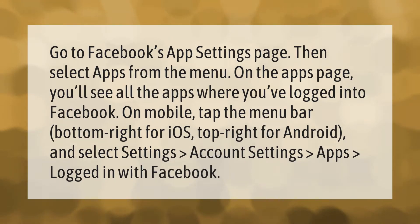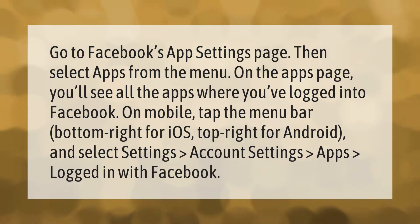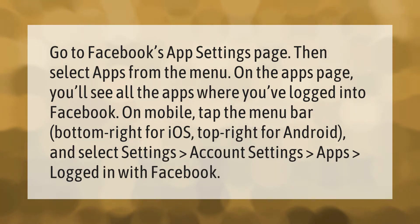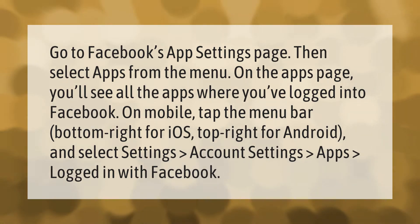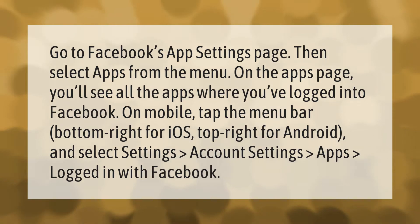Go to Facebook's app settings page, then select Apps from the menu. On the Apps page you'll see all the apps where you've logged into Facebook on mobile. Tap the menu bar — bottom right for iOS, top right for Android — and select Settings, then Account Settings, then Apps Logged In With Facebook.